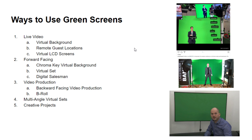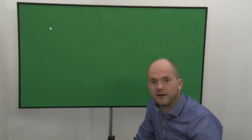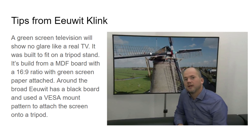Some ways to use green screens: live streaming, virtual backgrounds, remote guest locations, virtual LCD screens, and even multi-angle virtual sets. There are many creative projects you can do. For example, you can make it look like a television is in the background with no glare — you don't even have to buy a real TV.